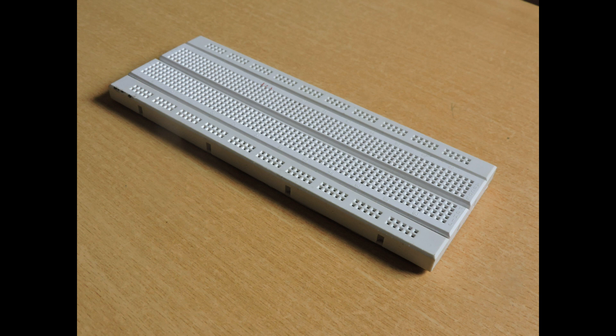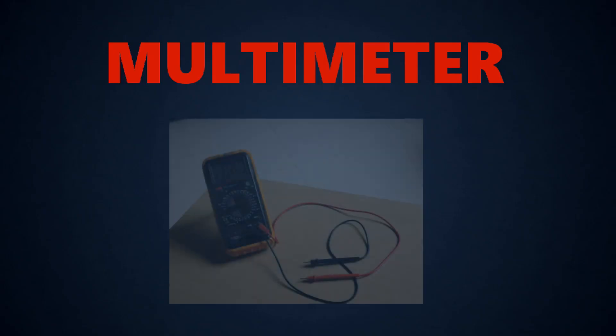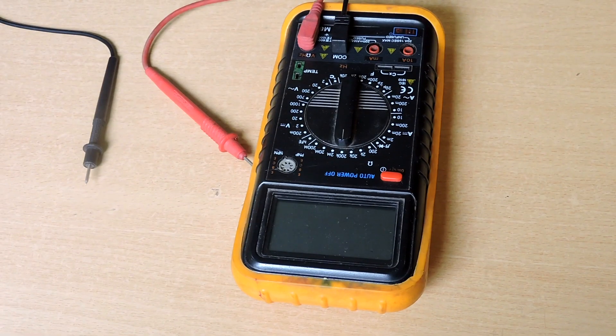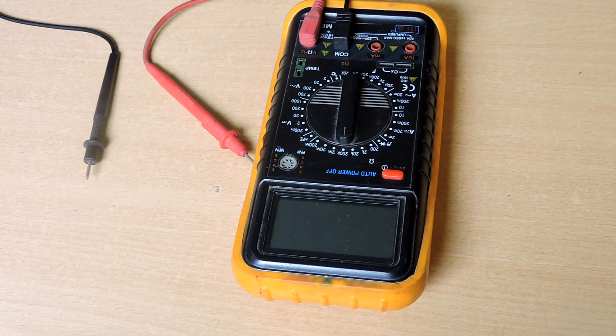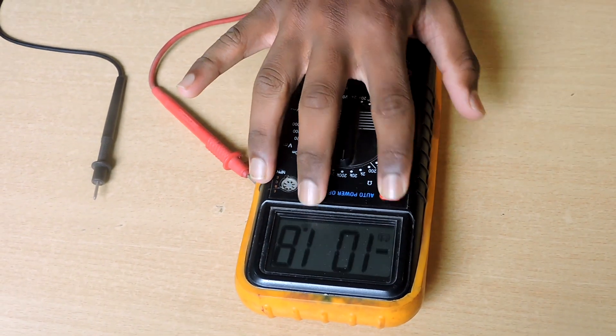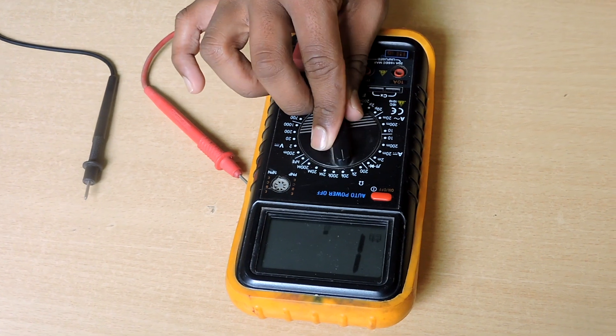Resistors are very small but useful components in electronics. Resistors are used to reduce the current flow, to adjust the signal level, to divide the voltages, to bias the active elements, and to terminate the transmission line.